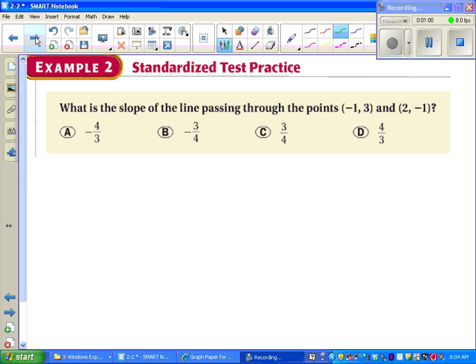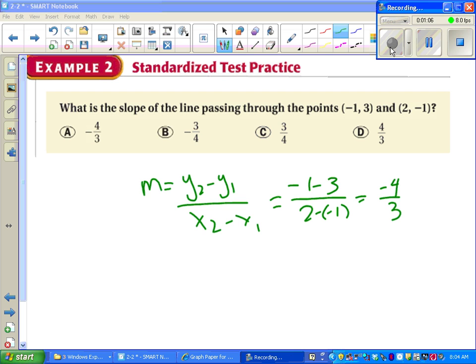Standardized test practice, same kind of problem, except this time we don't have a graph. We have points, so we have to use the formula. This is a pretty straightforward problem. Once we get through the formula, we see we get negative 4 over 3, which is choice A.